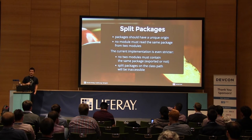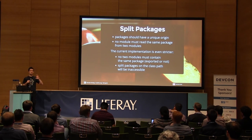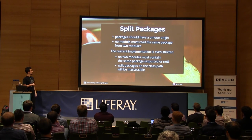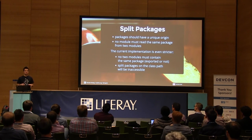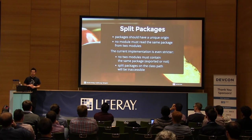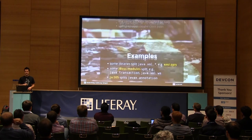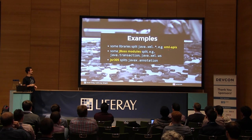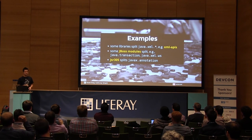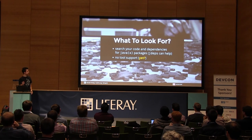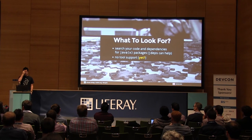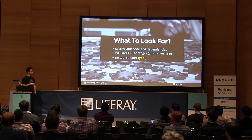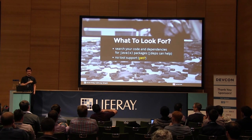Split packages were a surprise — I didn't know that was a thing. Packages should have a unique origin within the module system, meaning no two modules should even contain the same package, or the JVM will refuse to launch. I wondered who would do that, but it happens: XML APIs from certain vendors, JBoss modules, the JSR-305 JAR. You can use the Maven Enforcer plugin's 'ban duplicate classes' rule to detect this. If you find a split, determine whether it's intentional. You can use upgradeable modules to replace entire modules, or the --patch-module option to push individual classes into an existing module.